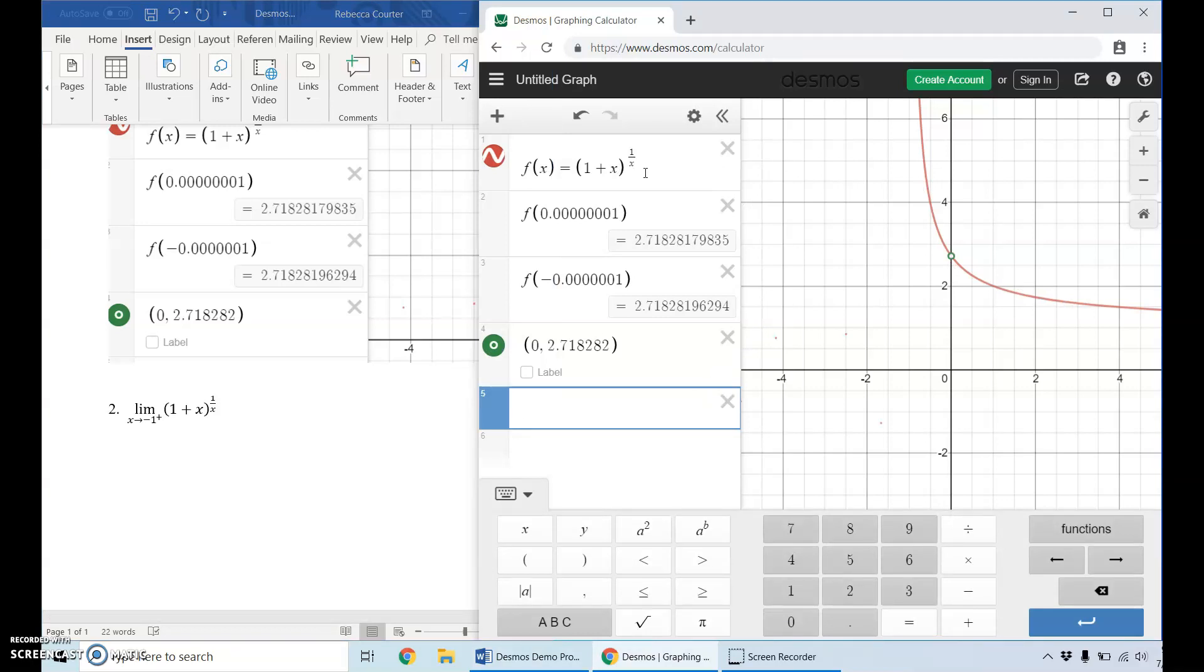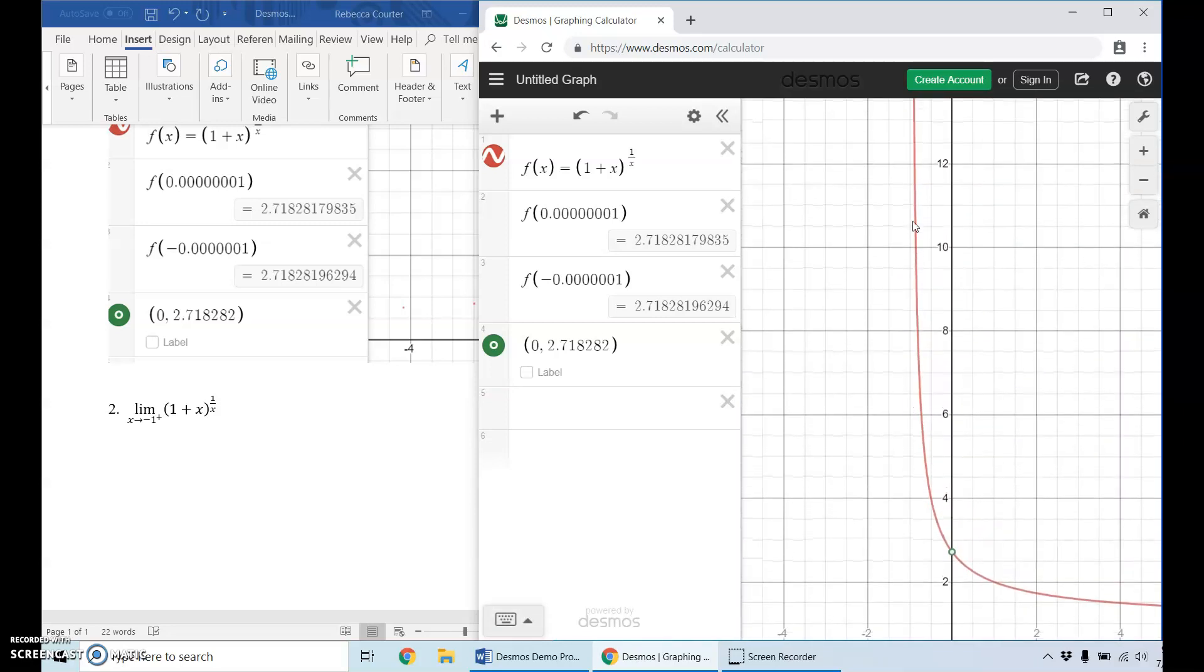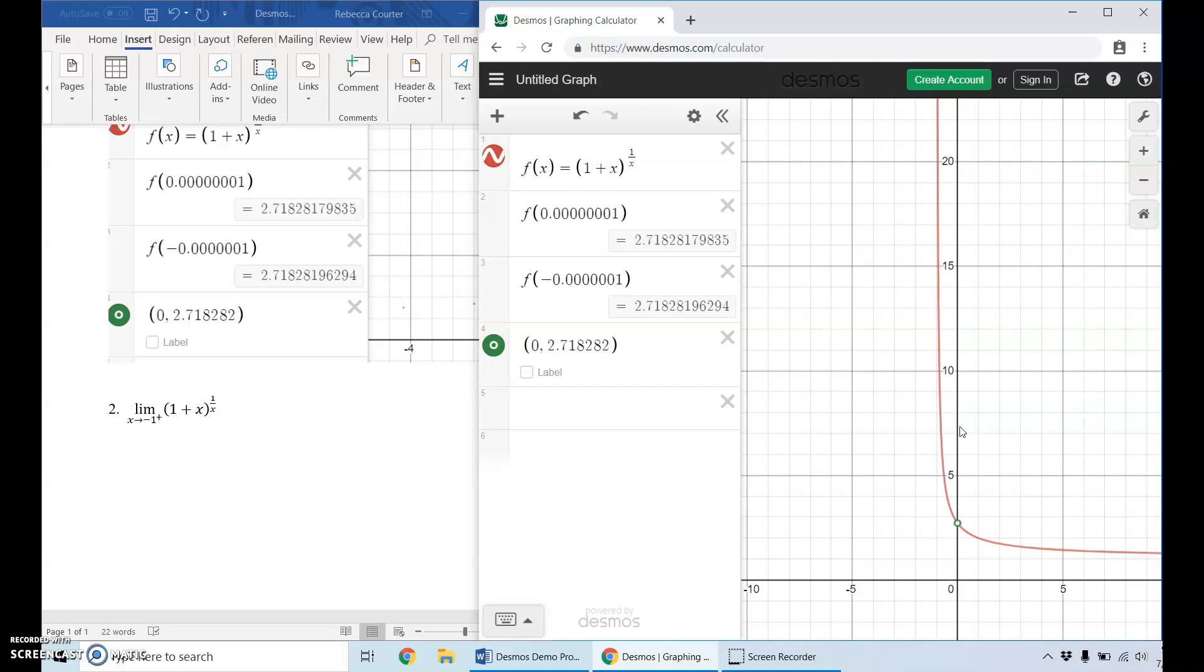Well we already have the graph here of the function 1 plus X all raised to the 1 over X, so what does it look like the function is approaching as X approaches negative one from the right? This is negative one and if I click and drag I can kind of see, well it looks, I can zoom out even, it looks like it just keeps going up and up and goes up towards infinity.